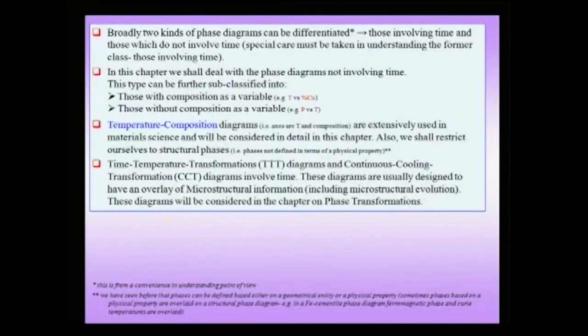Broadly, two kinds of phase diagrams can be differentiated: those involving time and those which do not involve time. Normally, those involving time, like the time-temperature transformation diagrams, are not typically called phase diagrams, but in the general sense they can also be classified as phase diagrams. Special care must be taken whenever you are talking about a phase diagram involving time, because such a phase diagram has a directionality to it.